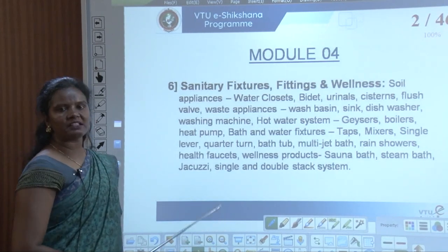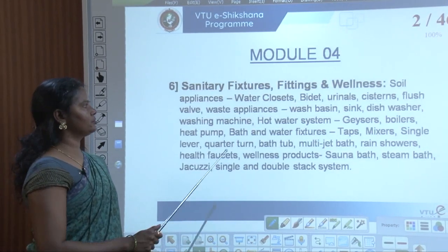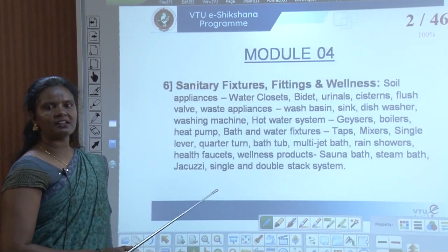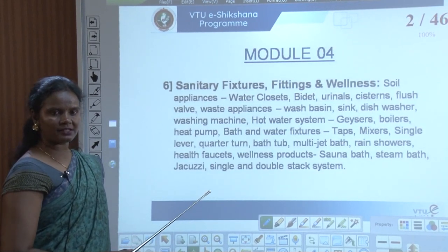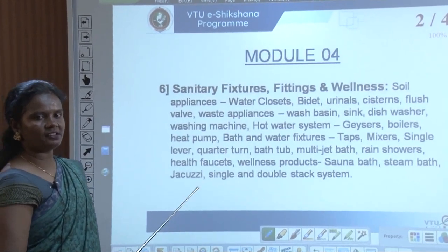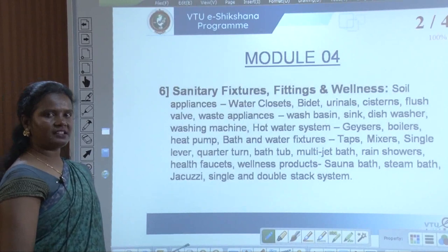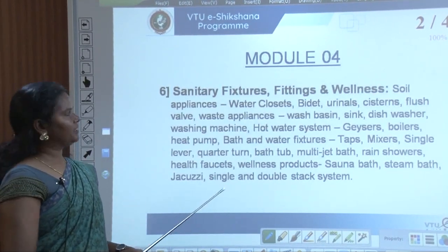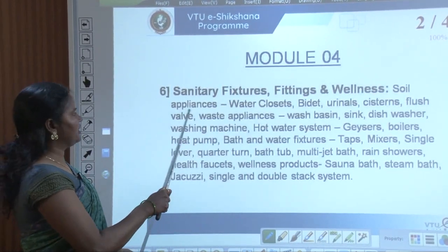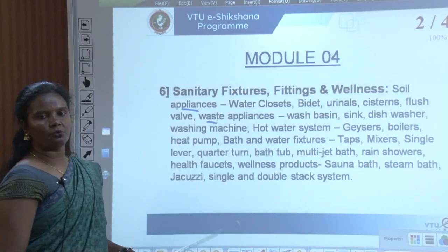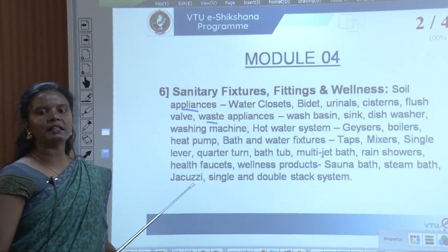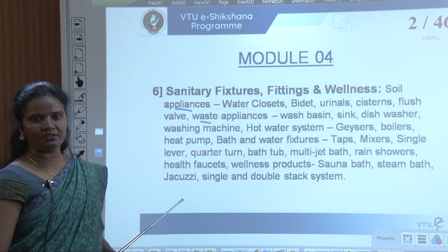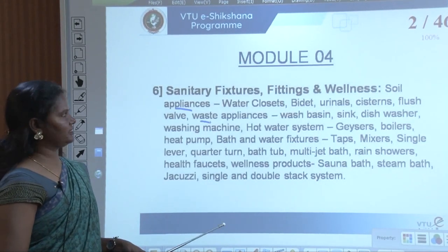In detail we will be studying soil appliances — those are water closets, bidet, urinals, cisterns, flush walls, etc. We will also be studying waste appliances. There is a difference between soil appliances and waste appliances. Wash basin, sink, dishwasher, and washing machine come under waste appliances.